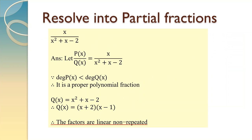Our second example is x upon x square plus x minus 2. Let P of x upon Q of x be equal to x upon x square plus x minus 2. P of x is equal to x, the power of x is 1, so degree of P of x is 1. Q of x is equal to x square plus x minus 2, the highest power of x is 2, so degree of Q of x is 2. The degree of numerator is less than degree of denominator, so it is a proper polynomial fraction. Now let us factorize Q of x — we get x plus 2 into x minus 1. Both of them are linear factors and both of them are different, so the case is of linear non-repeated type.